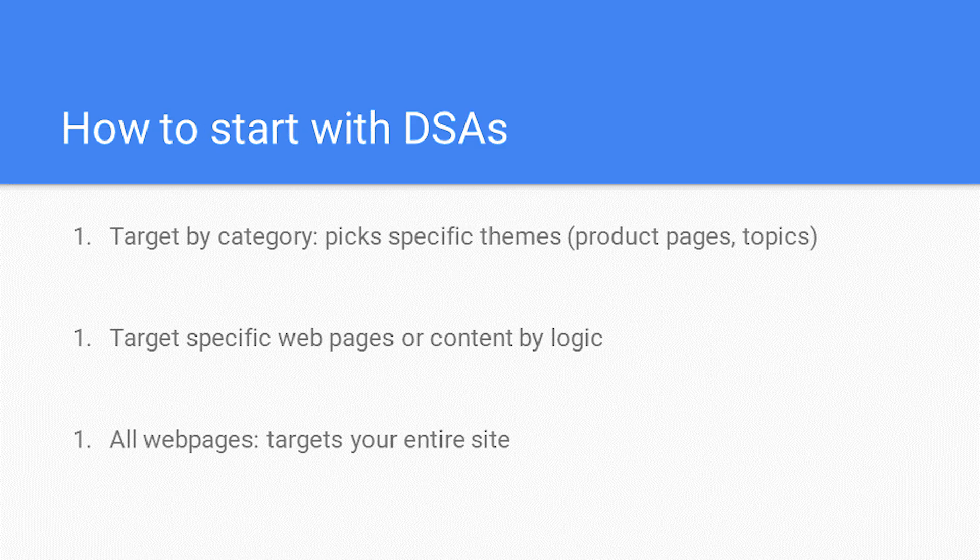How to get started with dynamic search ads: begin the DSA process by reviewing your entire website and casting a wide net. Your options for dynamic ad targets include categories, specific web pages, and all web pages targeting your entire site. I would recommend excluding obvious sections such as career pages, investor pages, and topics that marketing dollars really shouldn't focus on. Give the system more pages to crawl, speeding up the learning process and providing you with more insights to drive optimizations sooner.